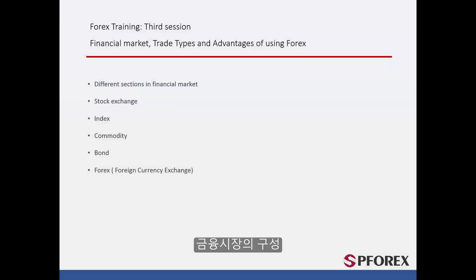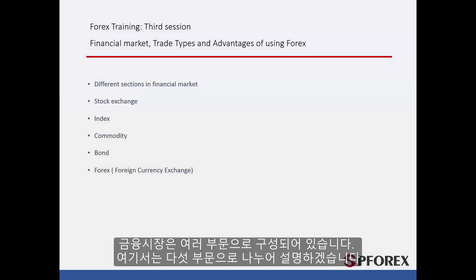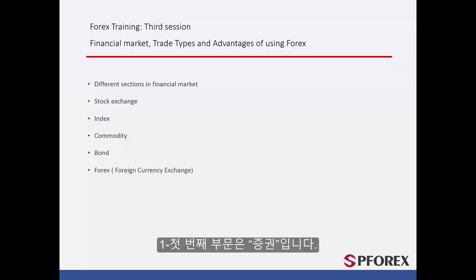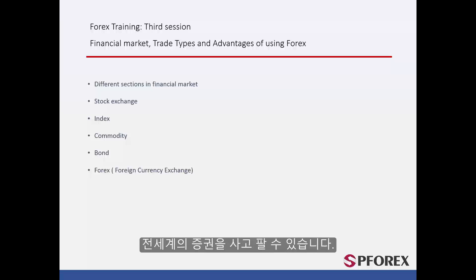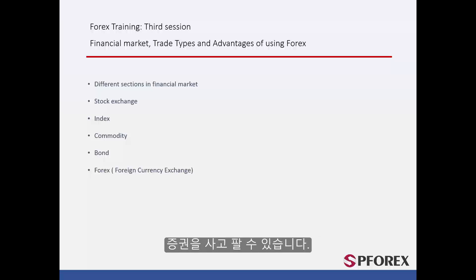All financial markets have different sections. Here we have broken it down into five. The first section is called a stock. With the help of financial institutions and other companies, people can either buy or sell these stocks all over the world. For example, in England, the London Stock Exchange has provided people with the chance of buying and selling stocks.